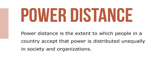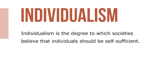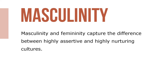Power distance is the extent to which people in a country accept that power is distributed unequally in society and organizations. In countries where power distance is weak, such as Denmark and Sweden, employees don't like their organization or boss to have power over them and want a say in decisions. Individualism is the degree to which societies believe individuals should be self-sufficient — in individualistic societies, employees put loyalty to themselves first and loyalty to their company second. Masculinity and femininity capture the difference between assertive and nurturing cultures: masculine cultures emphasize assertiveness, competition, material success, and achievement, whereas feminine cultures emphasize relationships, modesty, caring for the weak, and quality of life.